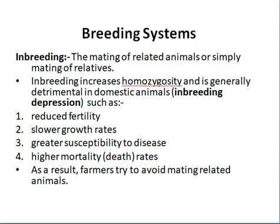The first breeding system is inbreeding — the mating of related animals. Examples include father-daughter mating, mother-son mating, cousin mating, and brother-sister mating. Inbreeding increases homozygosity because related animals receive similar genes from both their male and female parents, causing offspring to become homozygous. This is generally not good in domestic animals.